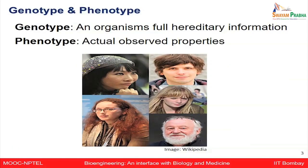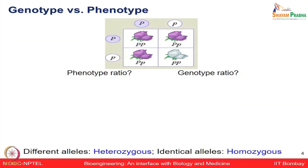When we say genotype, it means all the genetic contents of a given individual — all that genetic information. Phenotype refers to how an actual individual looks, their morphology, their phenotypic characteristics. Now let's discuss this in the context of Mendel's experiment.